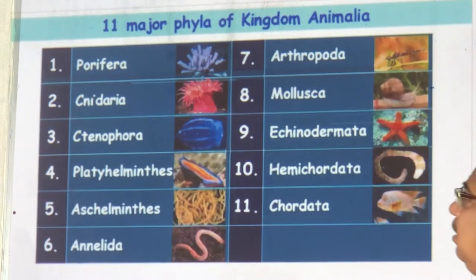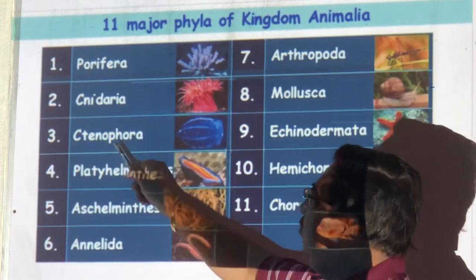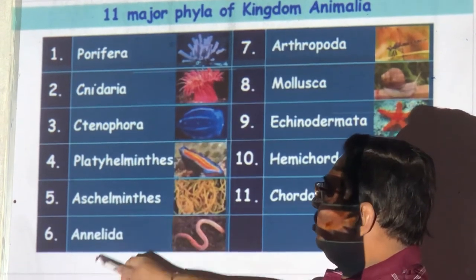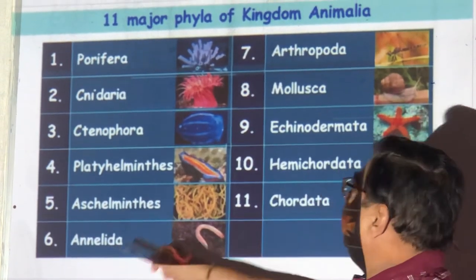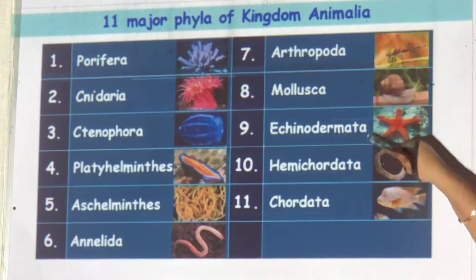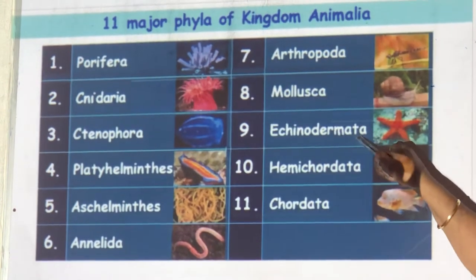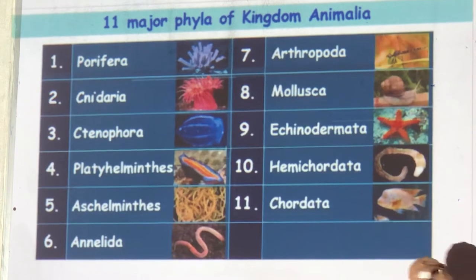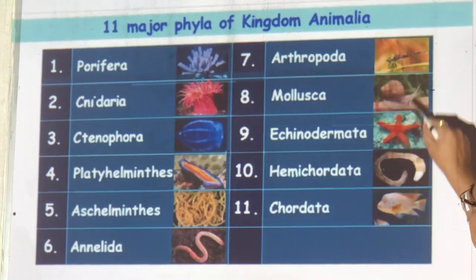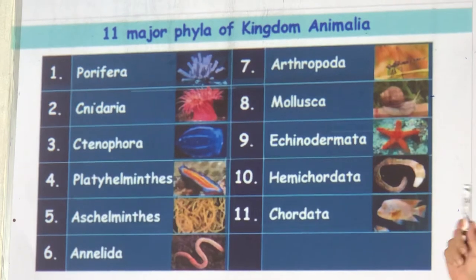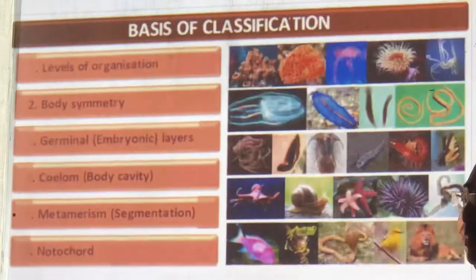The 11 phyla are: Porifera, Cnidaria, Ctenophora, Platyhelminthes, Aschelminthes, Annelida, Arthropoda, Mollusca, Echinodermata, Hemichordata, and Chordata. I will also show you one sample of each so that your mind works — a picture speaks how it works.